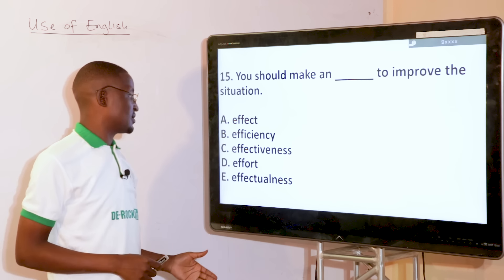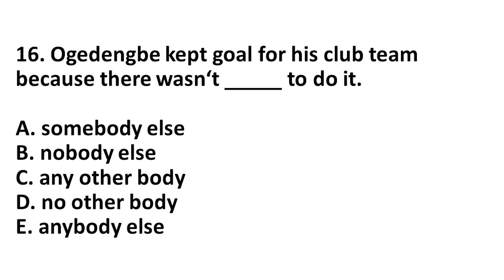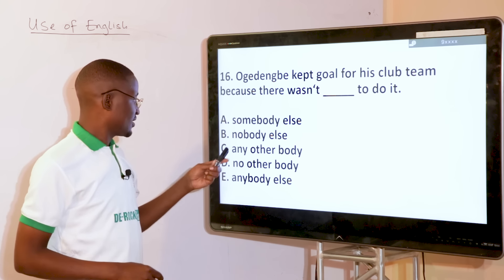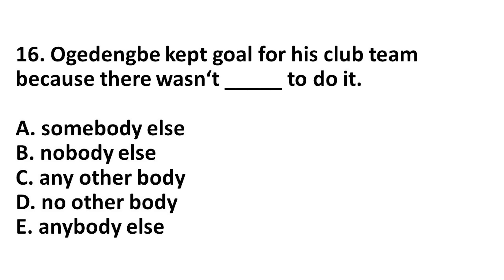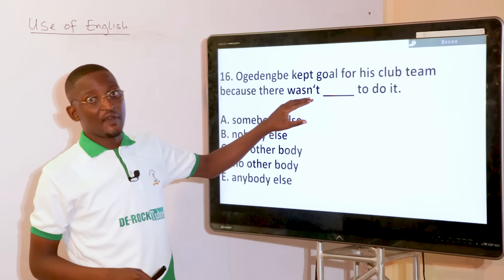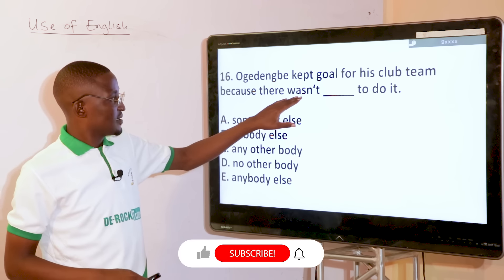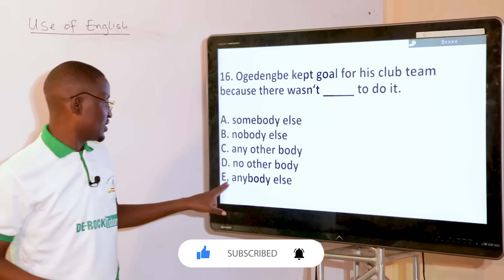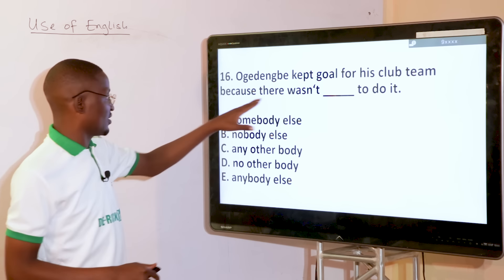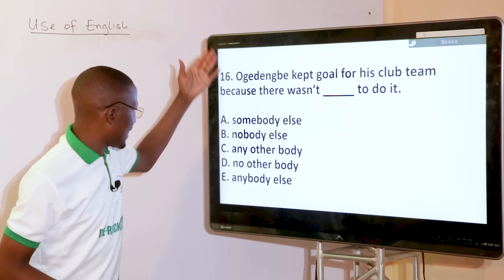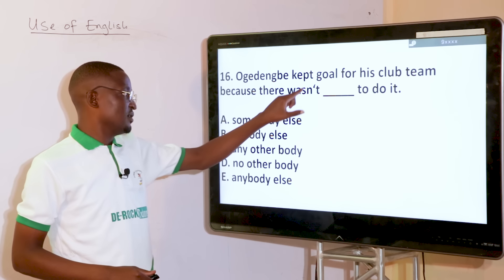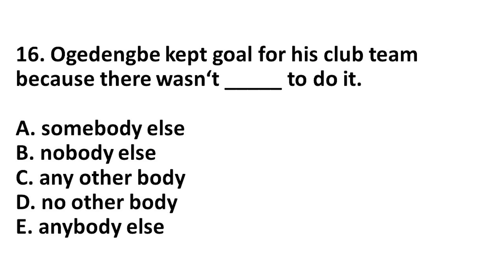Ok Dengbe kept goal for his club team because there wasn't dash to do it. Options: somebody else, nobody else, any other body, no other body, anybody else. Since we have a negative item — wasn't, a contraction of was not — anytime you see not, the word should go with any. So the answer is anybody else — there wasn't anybody else to do it. When you have not, which indicates negativity, the next choice should be any rather than someone or nobody.